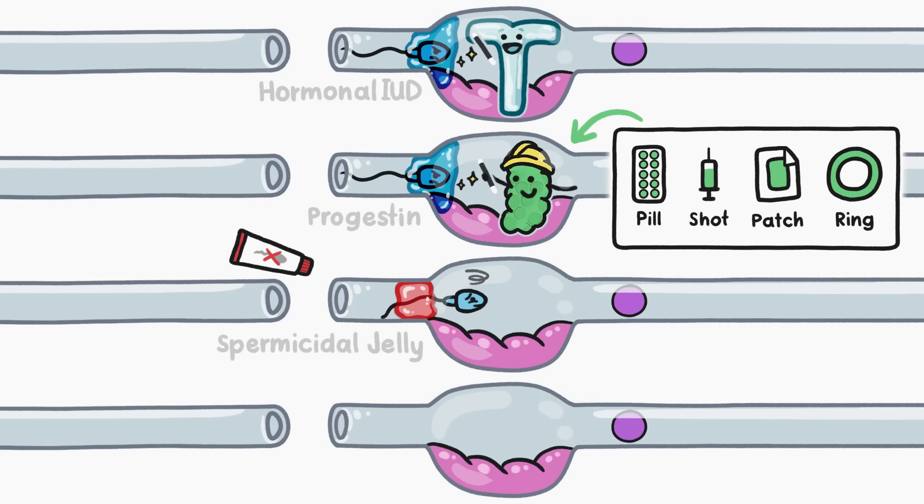Copper IUDs, which sperm are basically deathly allergic to, are a way longer-term, more effective way to kill sperm on their way to the egg.